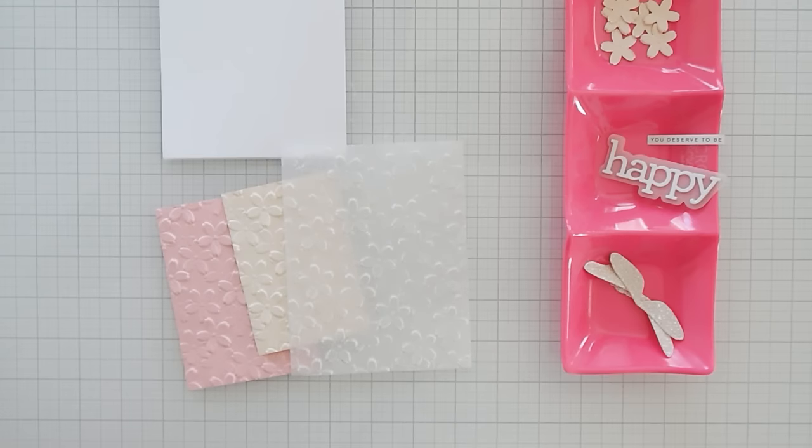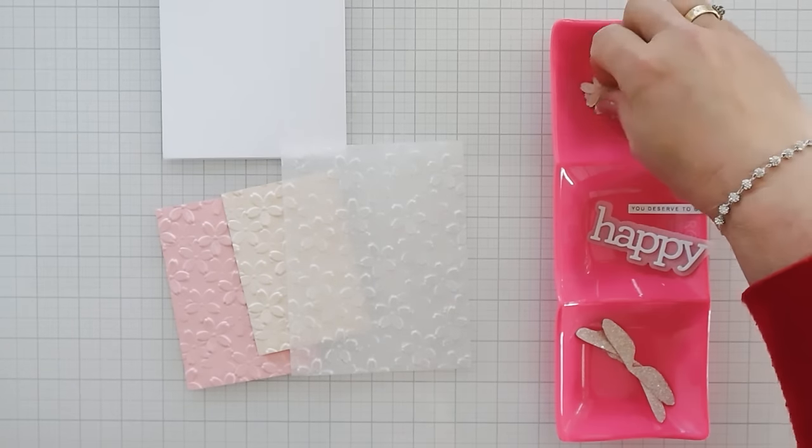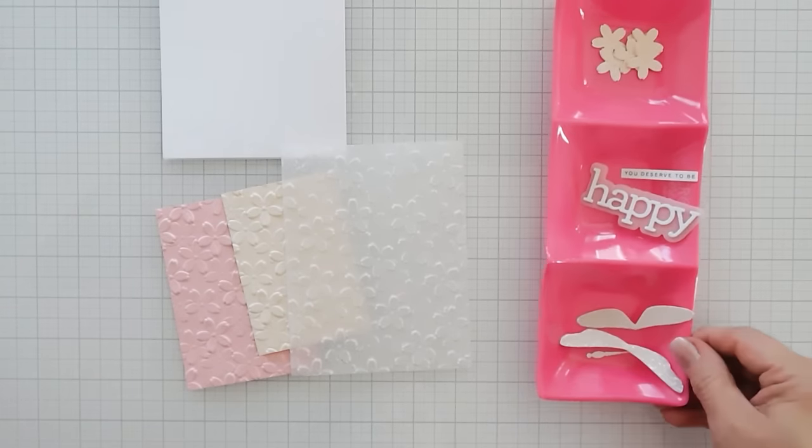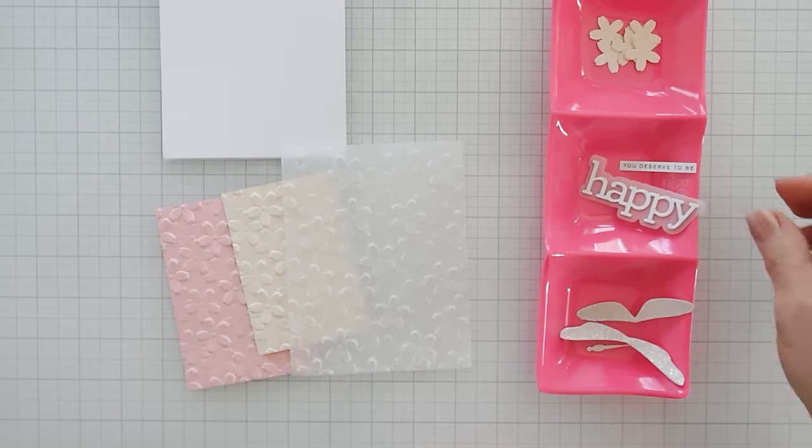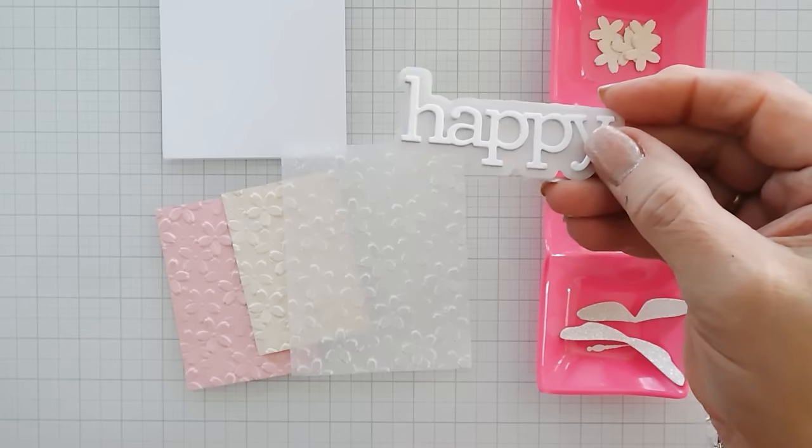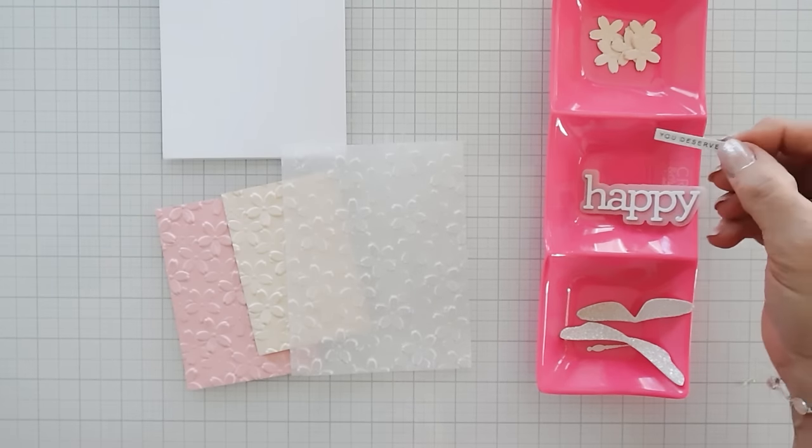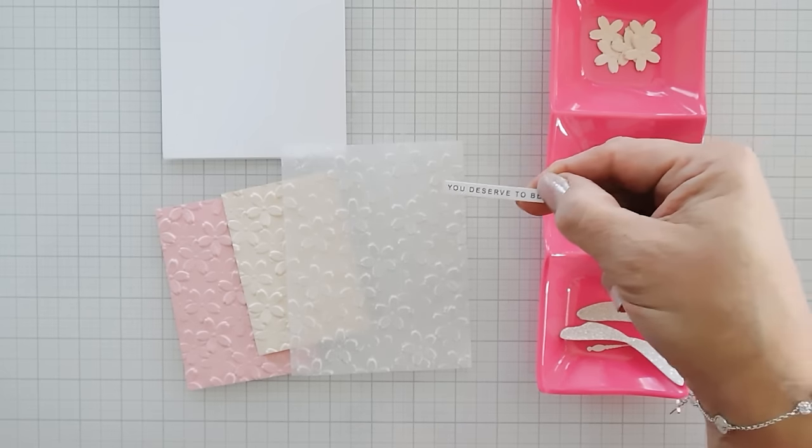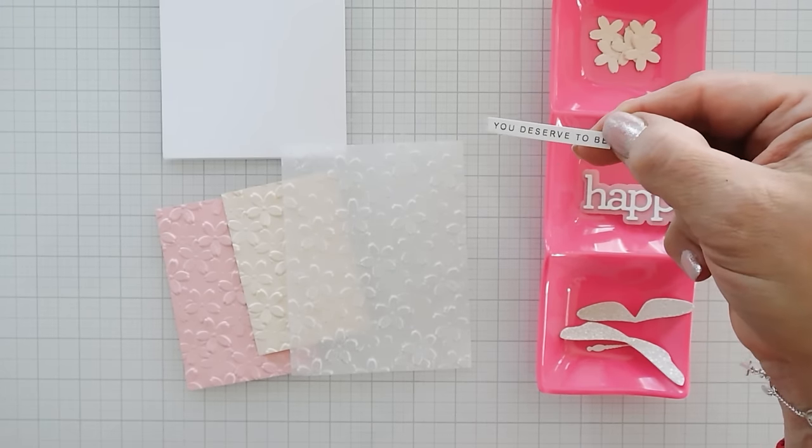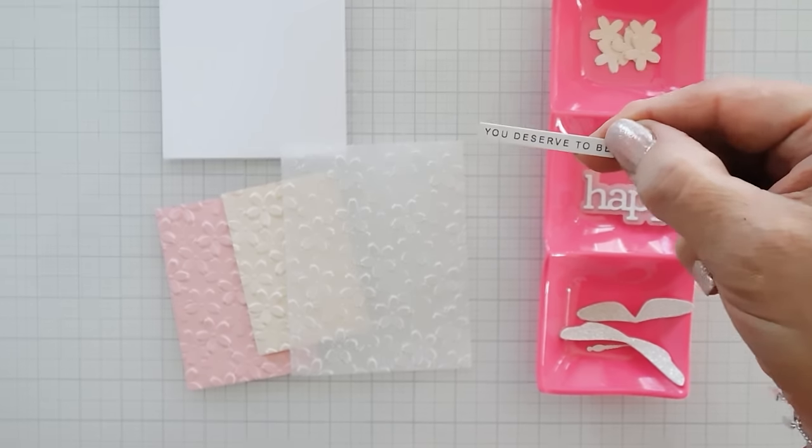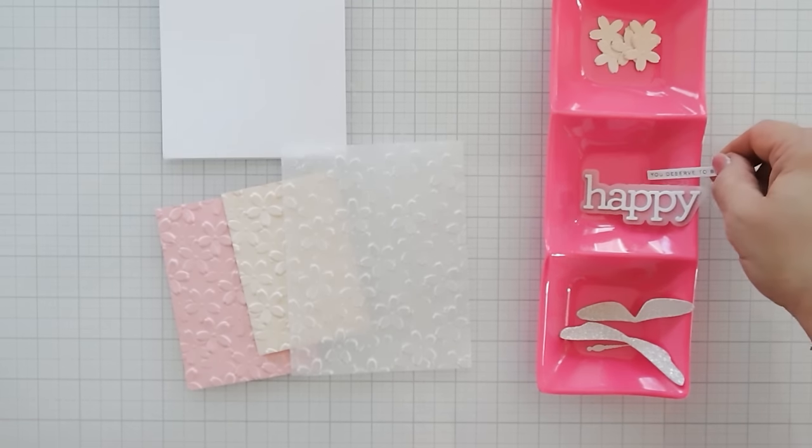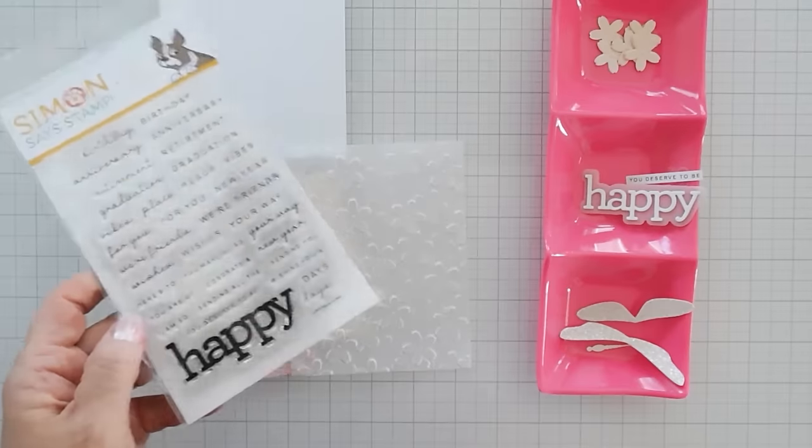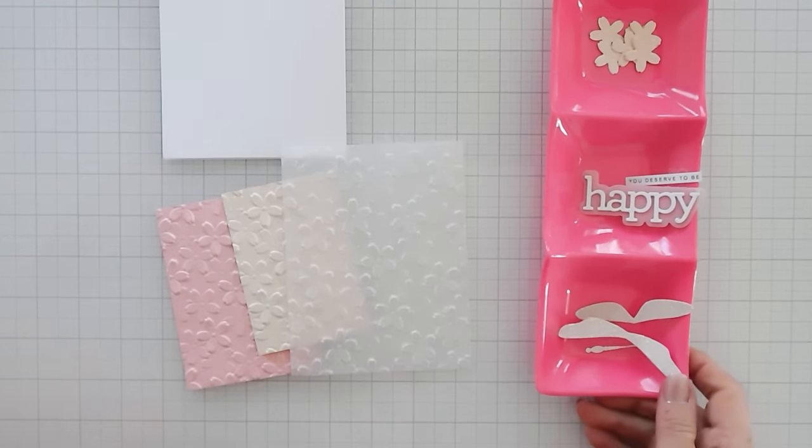I have everything die cut and embossed. I did die cut and emboss a few more flowers. And then I have my dragonfly. I went ahead and layered my happy on my shadow. Save a little bit of time here. And then I also stamped with my black ink. I just use memento because sometimes with smaller greetings, I like the crispness that the memento gives me. And this says, you deserve to be. So it'll say, you deserve to be happy. And again, using this right here, I just blocked it off. So that's all done.